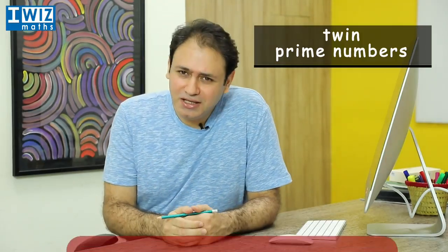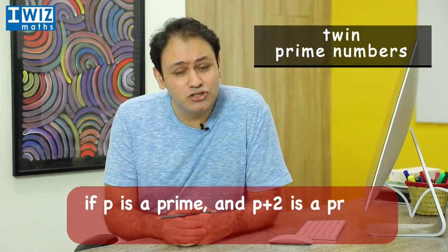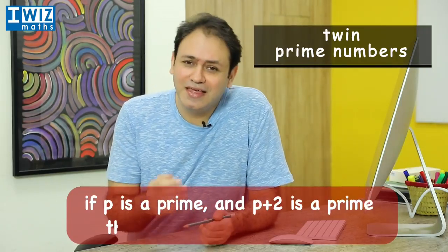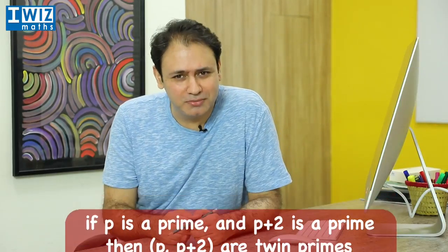Now the definition of twin primes is as follows. If p is a prime number and p plus 2 is also a prime number, then the pair p and p plus 2 are known as twin primes.